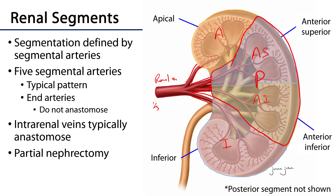It bears noting — much like in the lungs where we have an analogous system — that the intrarenal veins do typically anastomose. So arteries won't cross from segment to segment, but veins may.